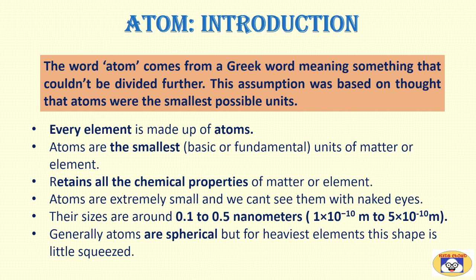Atoms are extremely small and we can't see them with naked eyes. Their sizes are around 0.1 to 0.5 nanometers. Generally, atoms are spherical. But for heaviest elements, this shape is little squeezed.